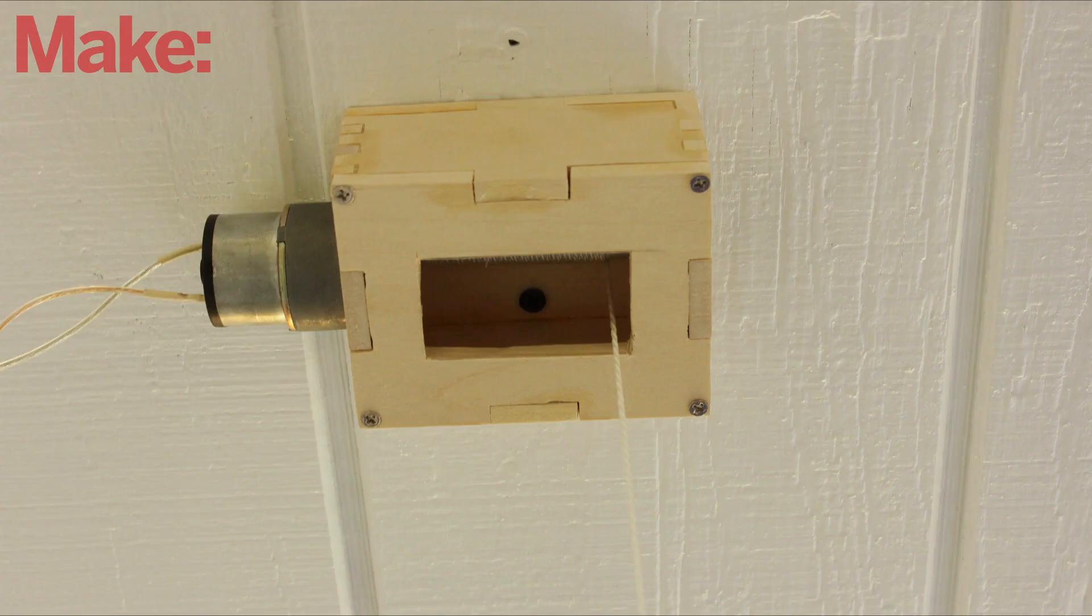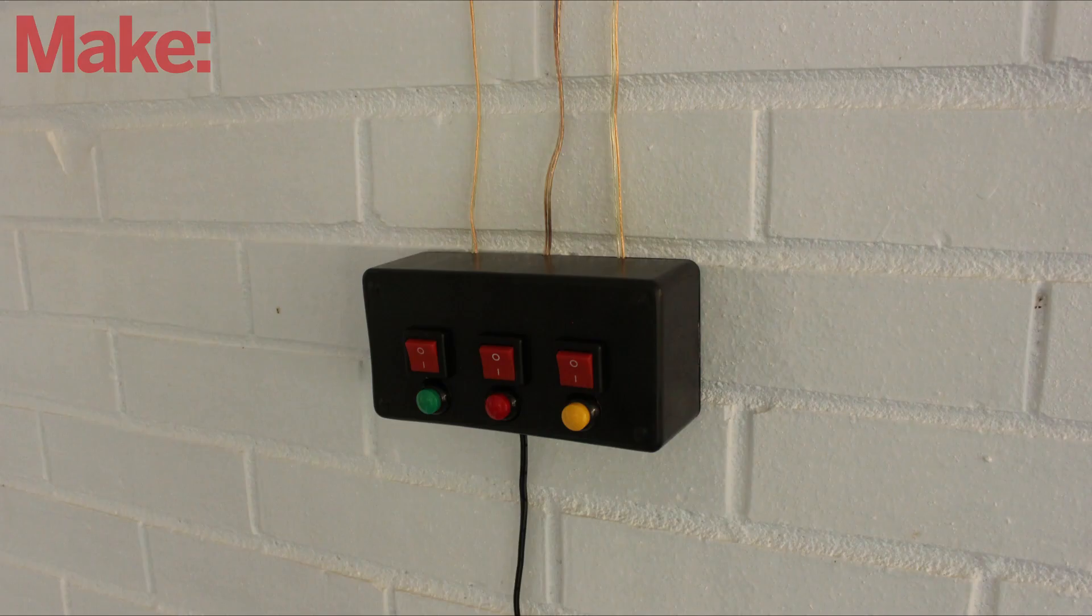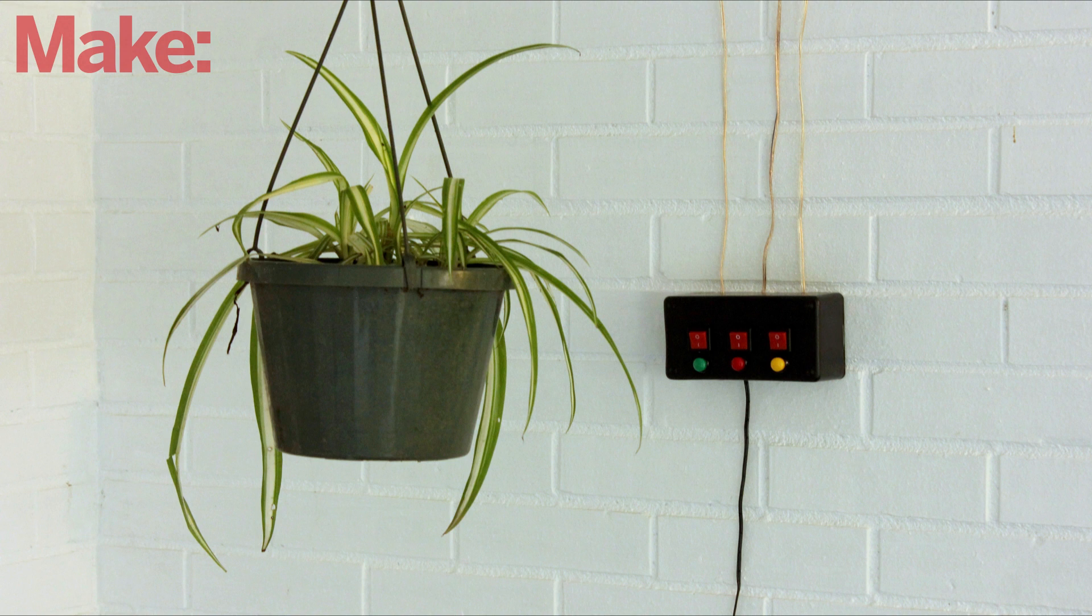The last thing that you need to do is attach the winch to the ceiling with a pair of wood screws and attach the control panel to a nearby wall. Hang your plants from the rope and your plant hanger is ready to use.